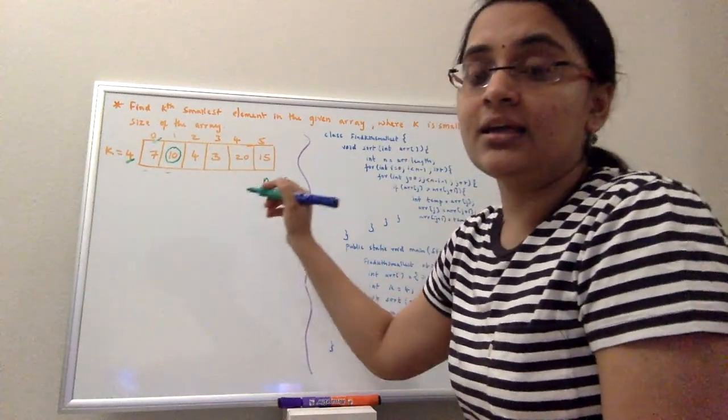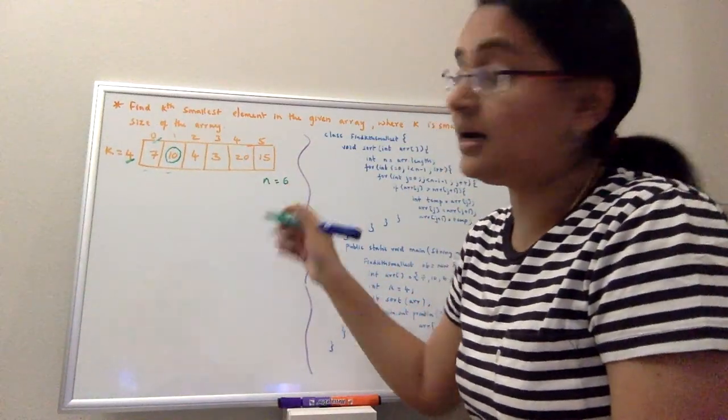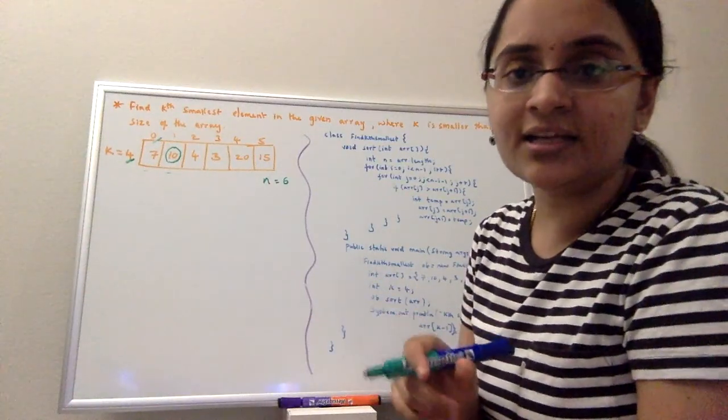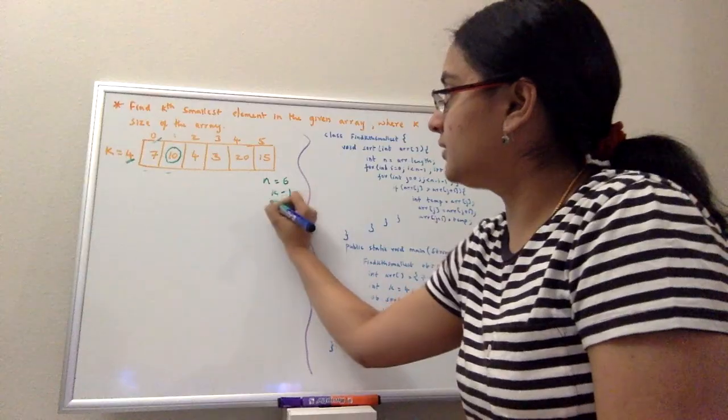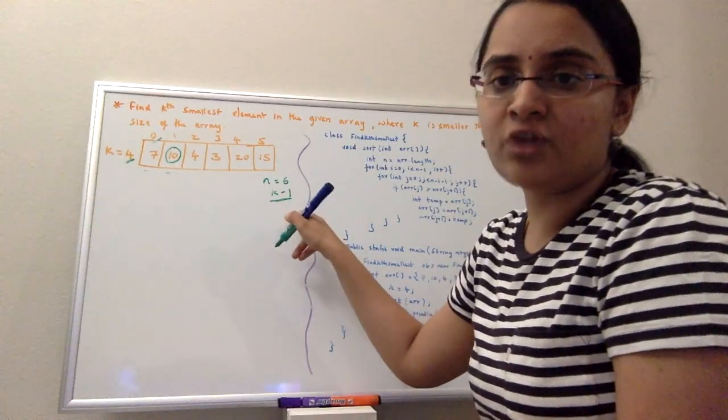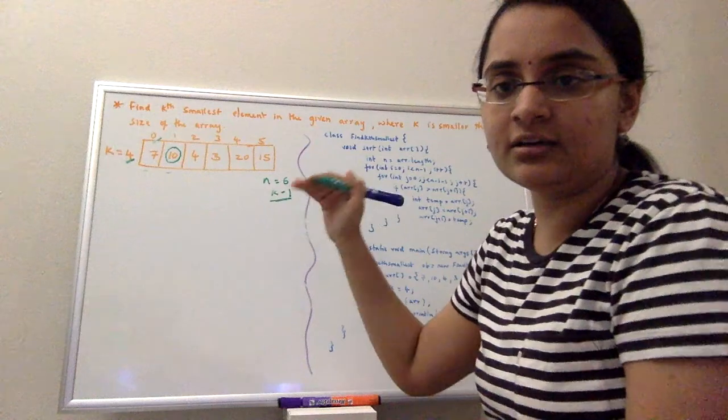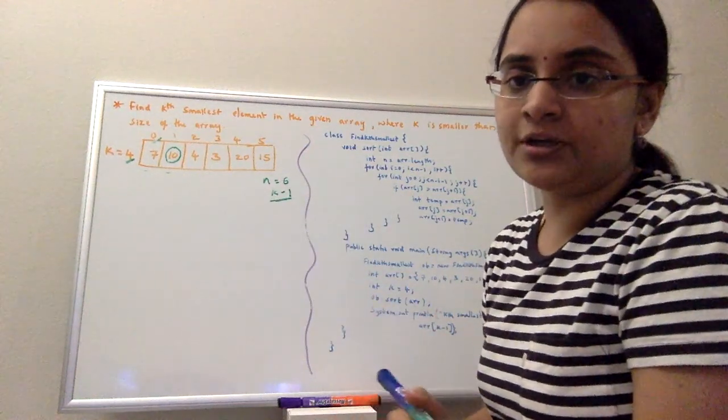So if you want the kth smallest element, after sorting, the actual element will be at the k minus 1 index. This is the index we should be looking for after sorting the array to return it to the calling function.